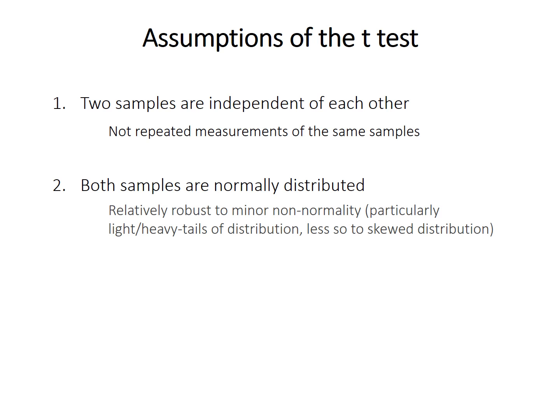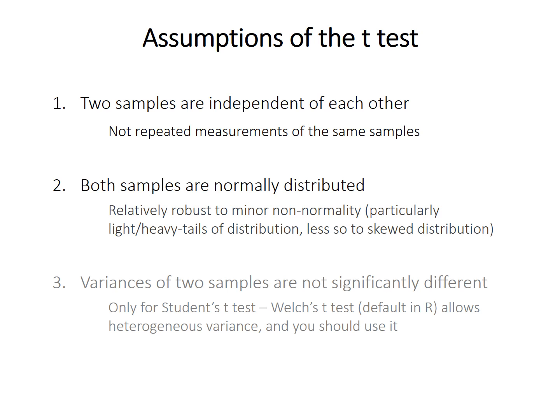If you have a peak in the middle and a relatively symmetrical histogram shape, it's probably fine for a t-test. The third assumption, which you'll often hear, is that the two samples have equal variance. But this only applies to the traditional form called Student's t-test. The default in R is Welch's t-test, which doesn't make that assumption. Welch's t-test is generally better and you should use it anyway, so we don't really need to worry about that assumption.